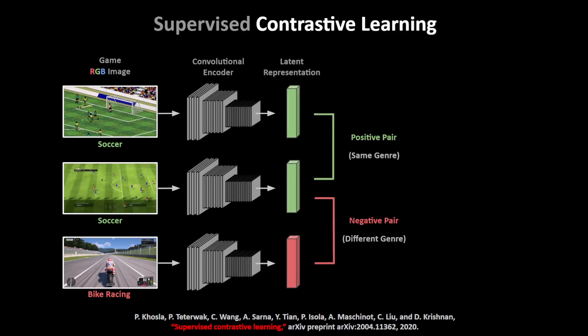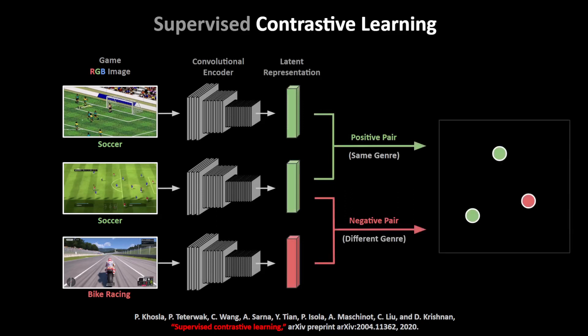With this in mind, we apply a contrastive loss function such that in a vector space, the positive representations are made more similar by pulling them closer together. Conversely, at the same time, the negative pairs are pushed further apart by making them more dissimilar.